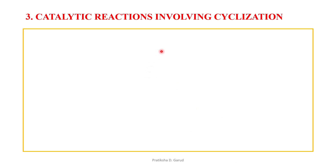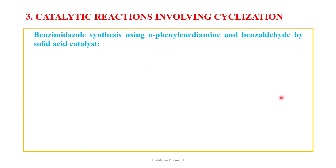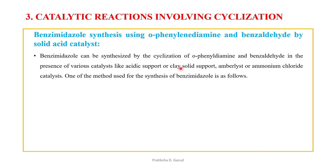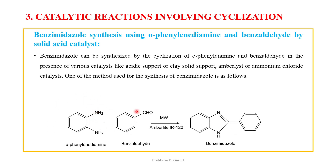The third catalytic reaction type is cyclization. An example is benzimidazole synthesis using ortho-phenylenediamine (OPD) and benzaldehyde with a solid acid catalyst. Benzimidazole can be synthesized by cyclization of OPD and benzaldehyde in the presence of various catalysts like acidic supports, clay, amberlite, or ammonium chloride. One method uses amberlite IR-120: OPD + benzaldehyde → benzimidazole, where cyclization occurs between the two nitrogen atoms and the carbon atom.